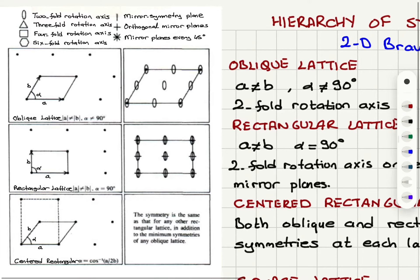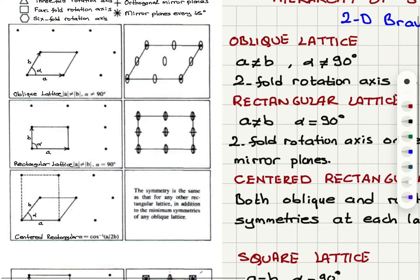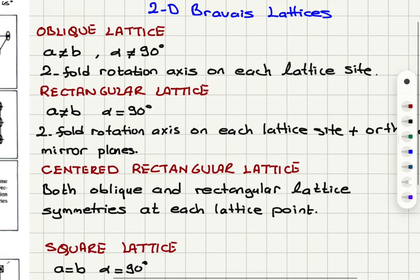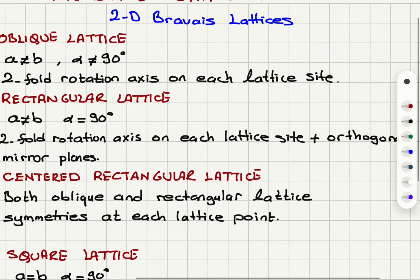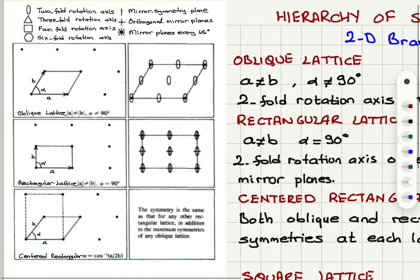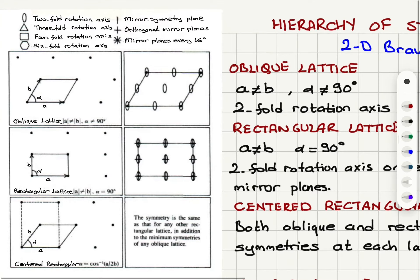The next one is rectangular lattice. Now we have a not equal to b but alpha, the angle between a and b, equals 90 degrees. We still have a twofold rotation axis on each lattice site and we also have orthogonal mirror planes or mirror axes at each lattice site.